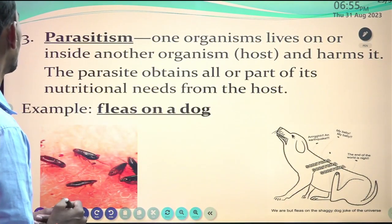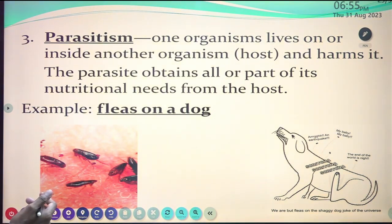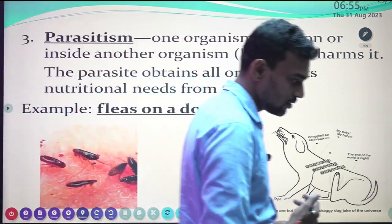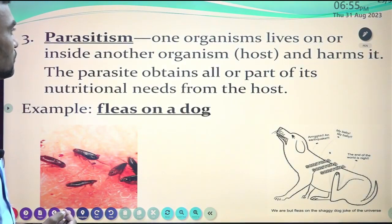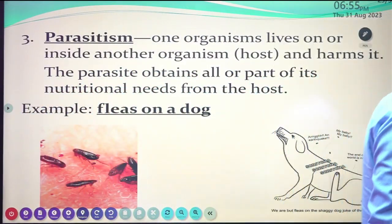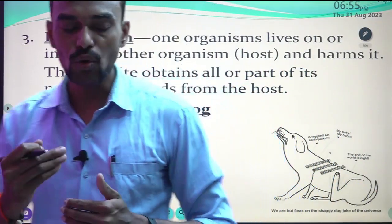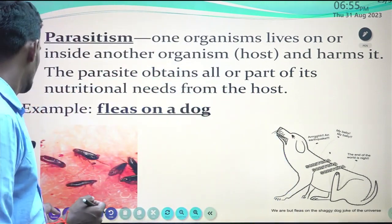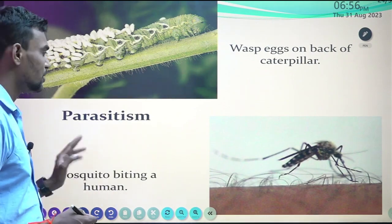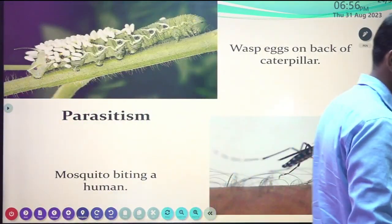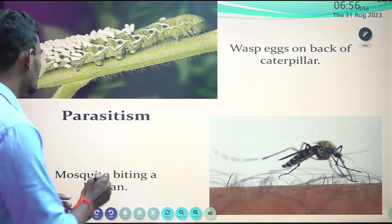Parasitism: one organism lives on, inside, or outside another organism (host) and harms it. The parasite obtains all or part of its nutritional needs from the host. For example, the fleas of a dog — fleas feed on the blood of the dog, and over time they harm the dog. The fleas require a particular host to survive — this is parasitism. Another example is a mosquito biting a human, because the female mosquito requires blood to lay her eggs — a perfect example of parasitism.